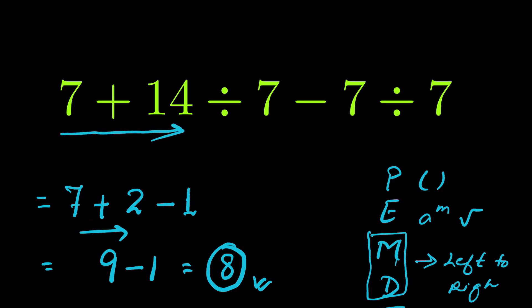14 plus 7 is 21, then divided by 7 is 3, then minus 7 is minus 4, then divided by 7 is minus 4/7. But this is not the way it's done. It's called order of operations, and we must follow this order of operations.